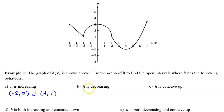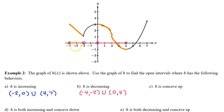Part b: where is h decreasing? h is going downhill from here to here, and then decreasing again further along. h is decreasing on the interval from negative 4 to negative 2, union 0 to 4.